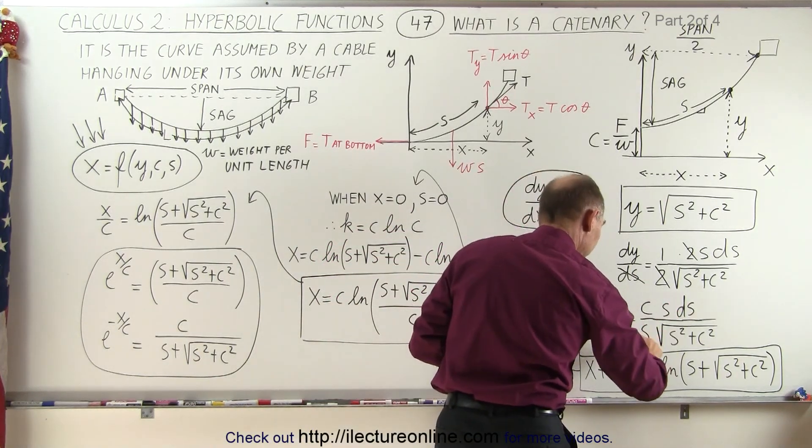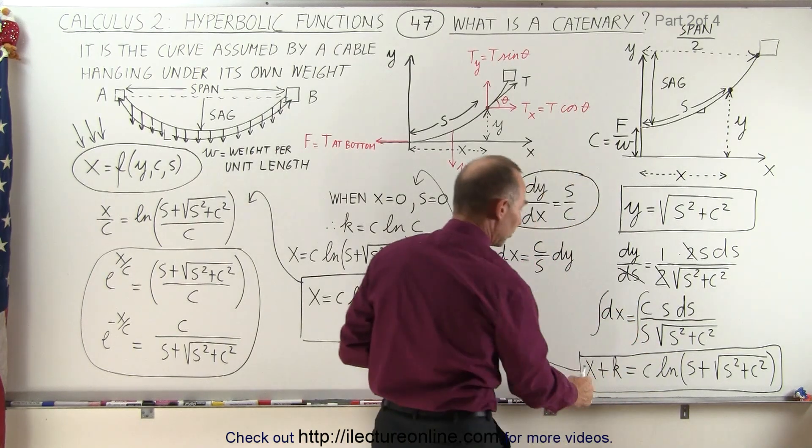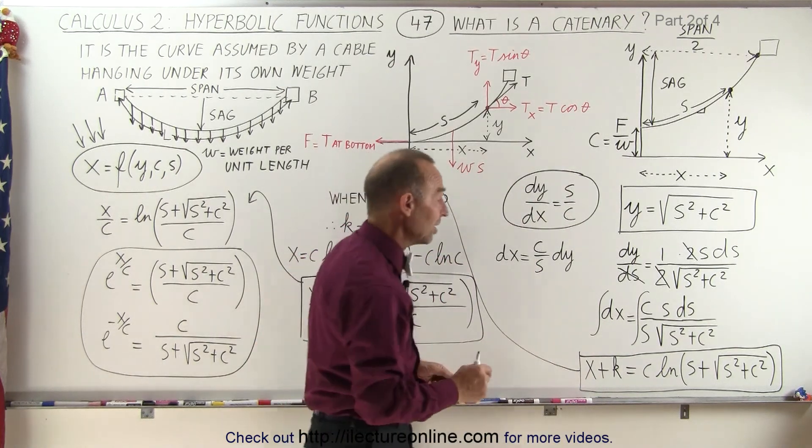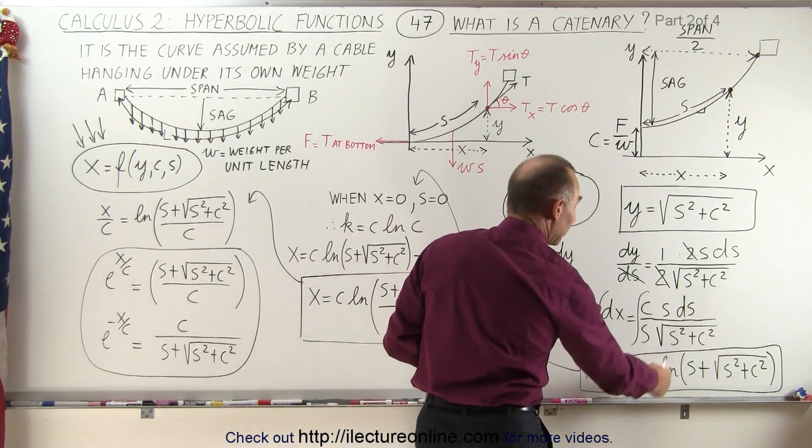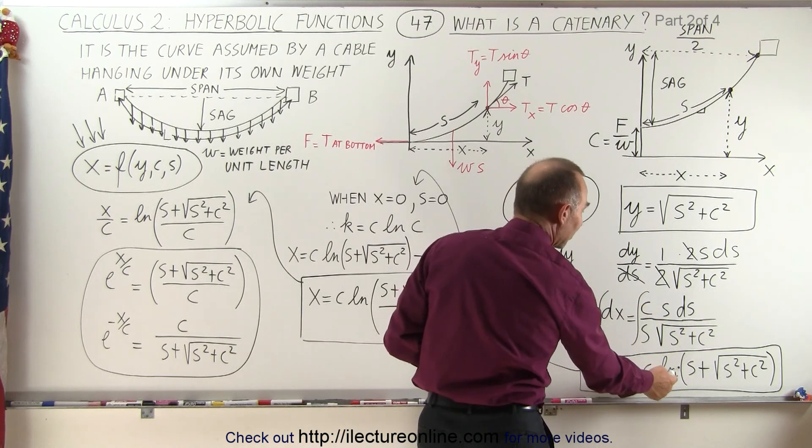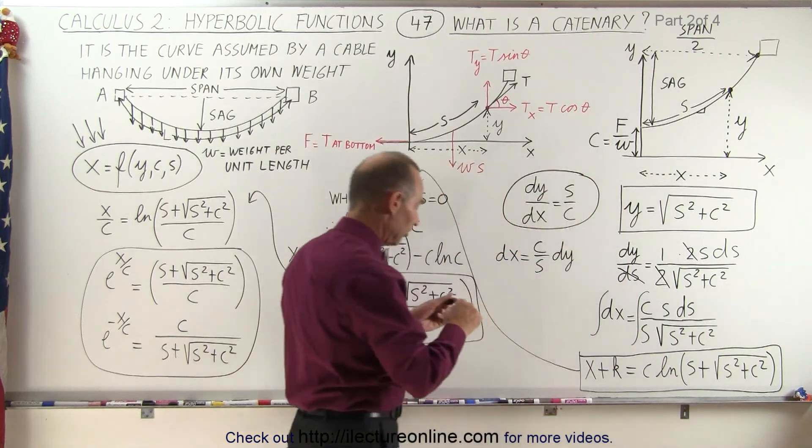Now what we're going to do is we're going to take the integral of both sides, and of course this is the integral with respect to s, this is the integral with respect to x, so we get x plus a constant. Again, we'll use the letter k instead of the letter c. And the integral of this is equal to c, because that's a constant, that comes out the integral sign, times the natural log of s plus the square root of s squared plus c squared.